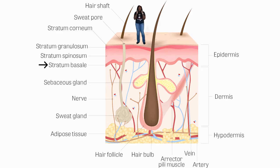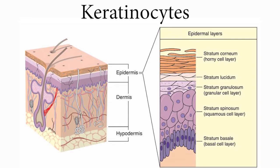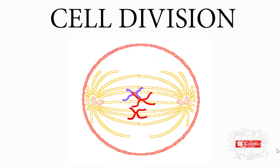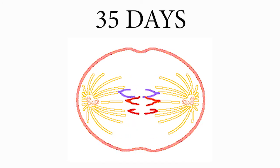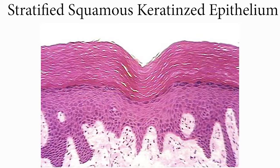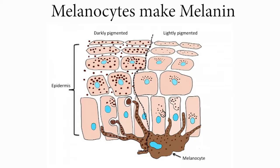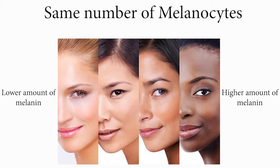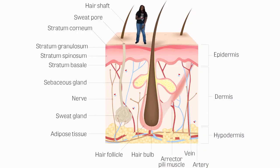Last but not least, we have the stratum basal layer, also known as the base layer. All of the previous layers are created by the stratum basal layer. Here we find keratinocytes — cells that make keratin and make up more than 90% of the epidermis. These cells undergo mitosis and migrate through the other layers until they reach the skin's surface, which takes about 35 days. Melanocytes, cells that make the pigment melanin, are also found here. Each person has the same number of melanocytes; it's the amount of melanin produced that differs, determined by genetics and sun exposure.